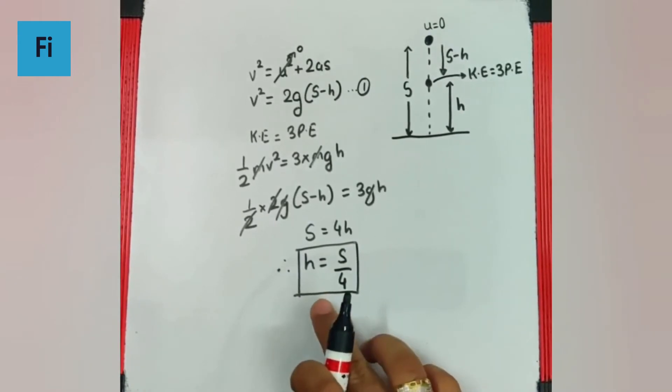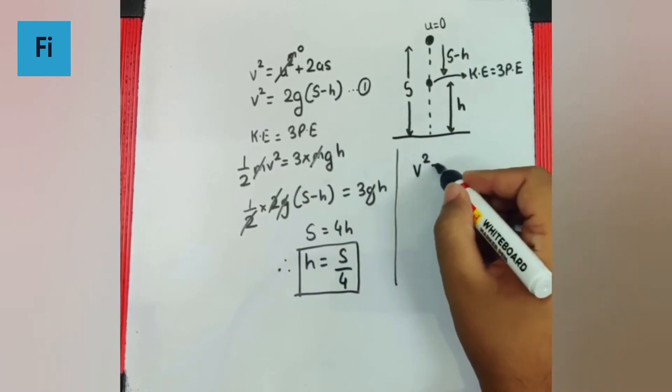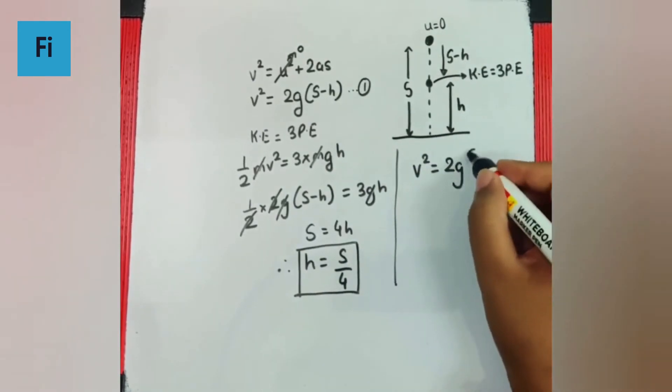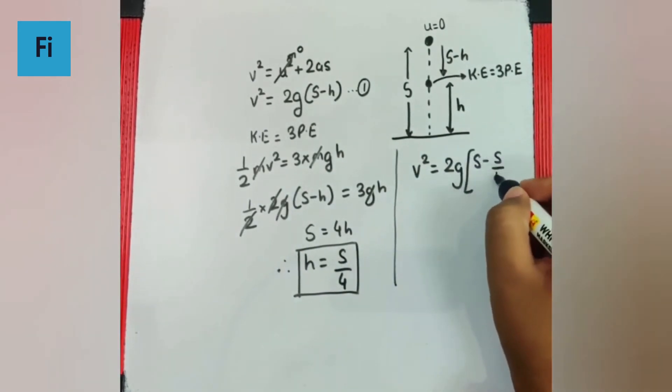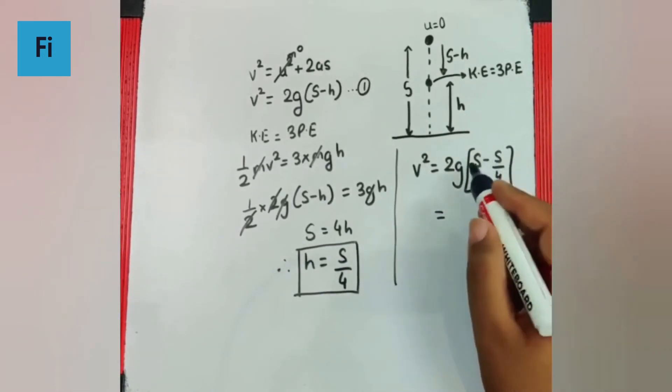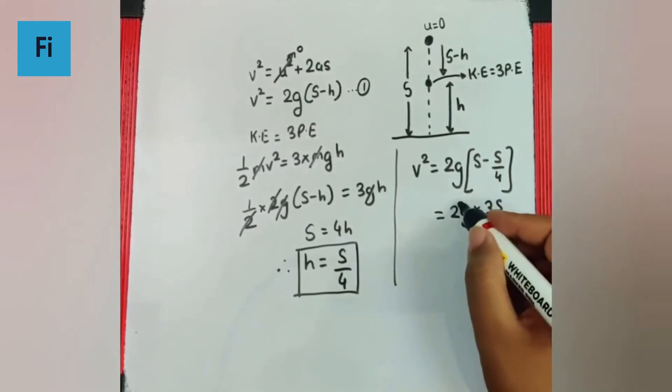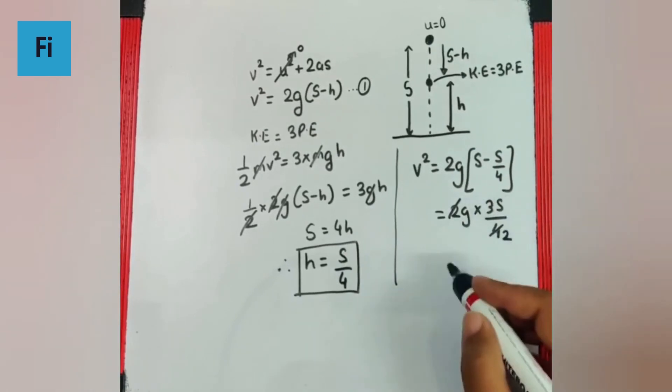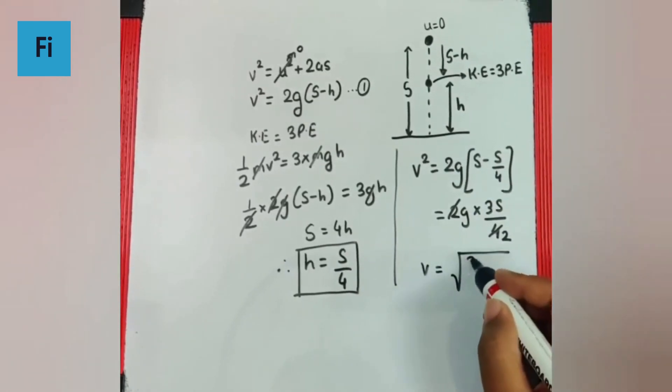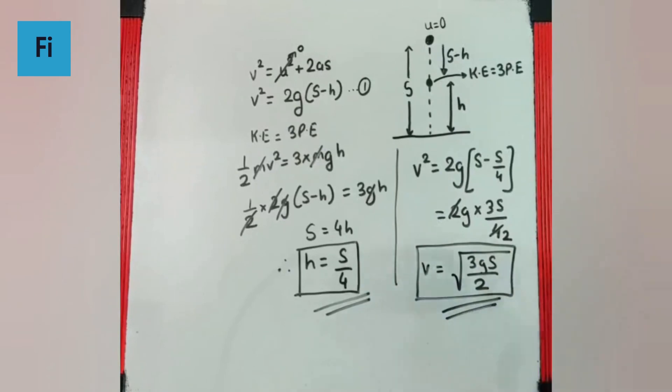Now once you get this height as s by 4, I can resubstitute this value in equation 1. So I get v square is equal to 2g in the bracket s minus s by 4 that is nothing but 3s by 4. So 3s by 4, 2g into 3s by 4 gives v as root of 3gs by 2. So height as s by 4 and velocity as root 3gs by 2 is our final answer.